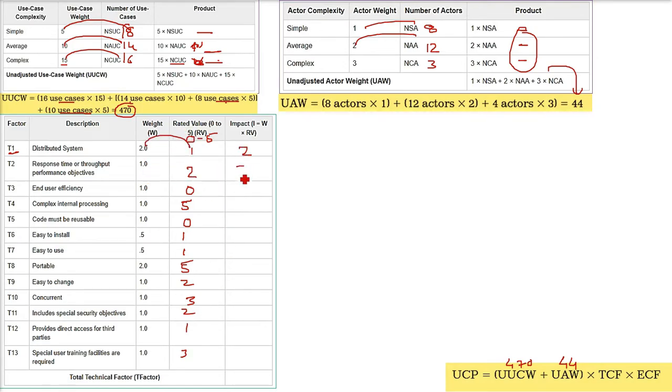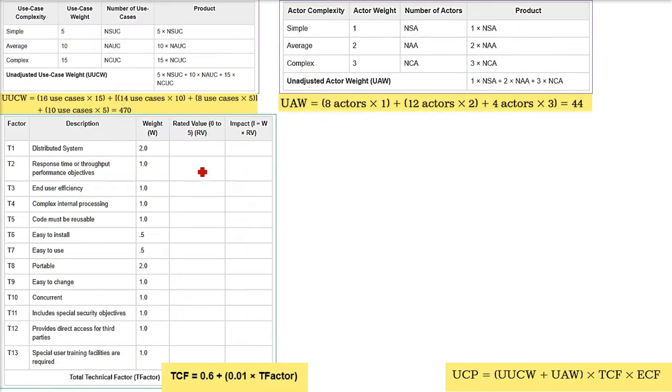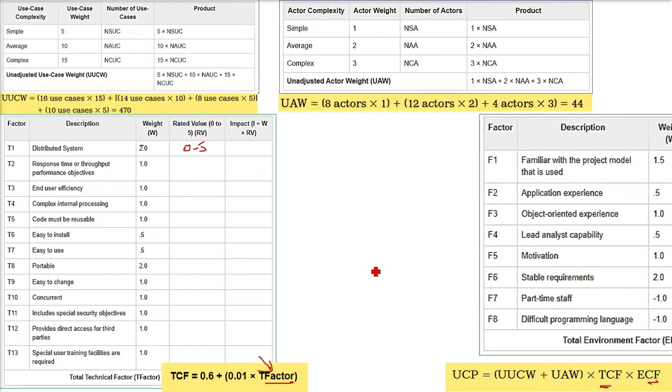Like this, every two values you have to multiply. Then finally what you get in this column, you have to add. Add all of these in this column. So you will get T factor. Total technical factor. This is not TCF. You get a T factor. For TCF, there is an expression. What is the expression? 0.6 plus 0.01 into T factor. So you have given the value here from 0 to 5. You got the last column. You added the last column. That is going to be T factor. And put it here in this formula. When you put this, you will put value in this formula, you will get a TCF. I will just tell you what the TCF value will be. Before that, let me go to ECF.